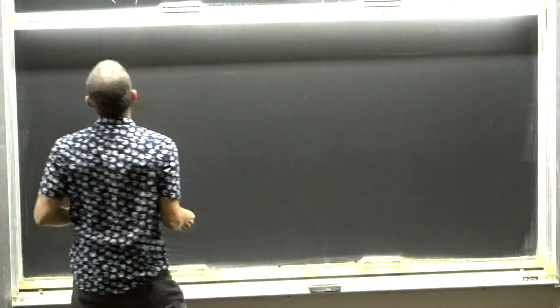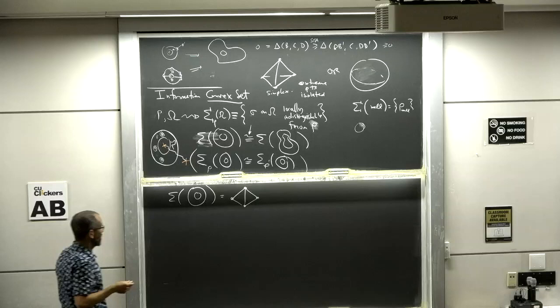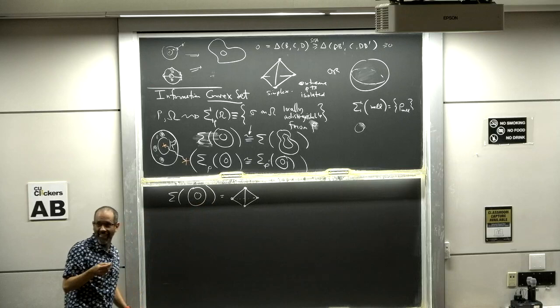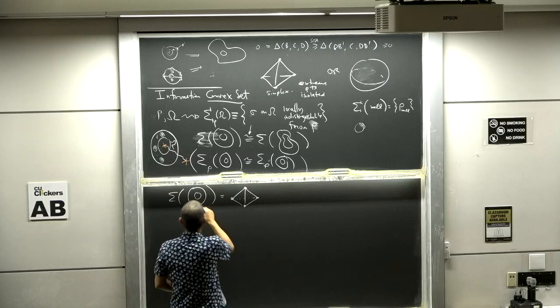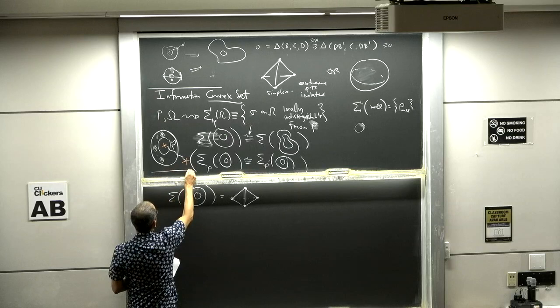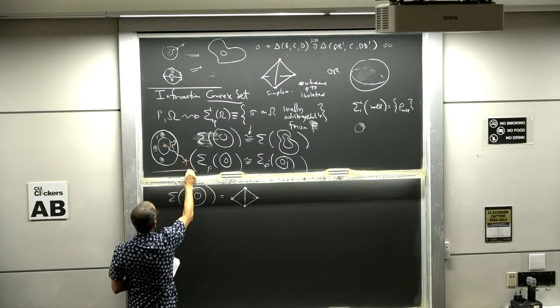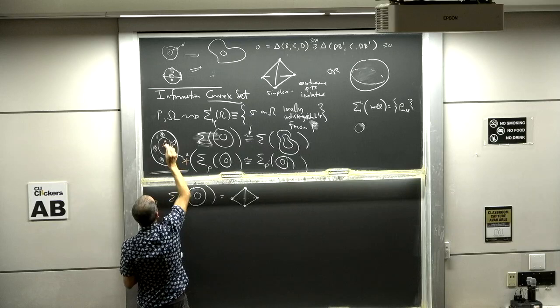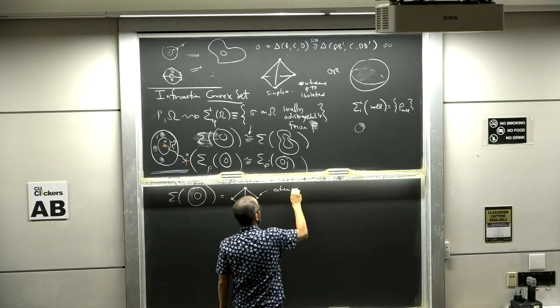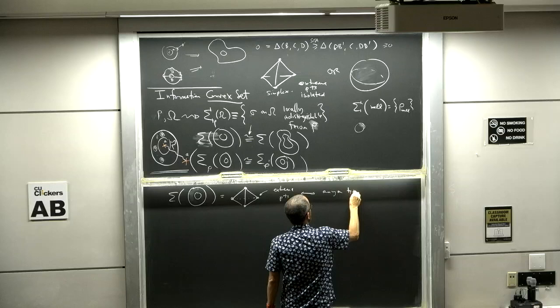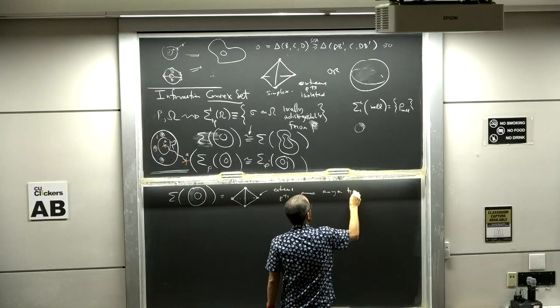The first interesting case I alluded to: the information convex set of the annulus is a simplex. The extreme points correspond to anyon types. For each type of anyon we can create, we get an extreme point. These extreme points of the information convex set correspond to anyon types. There's a special one — the reduced density matrix of the reference state, trace over the complement of the annulus, call it ρ₁ — that corresponds to the trivial anyon type, i.e., not doing anything.